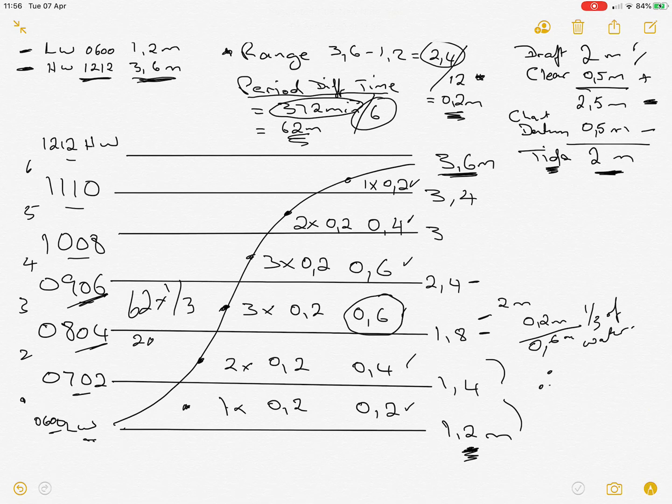Therefore 0804 plus 20 minutes means at 0824 we will have 2 meters of tide. Now the exact same can be done if we decide to look at, say, how much water will we have at 1038.